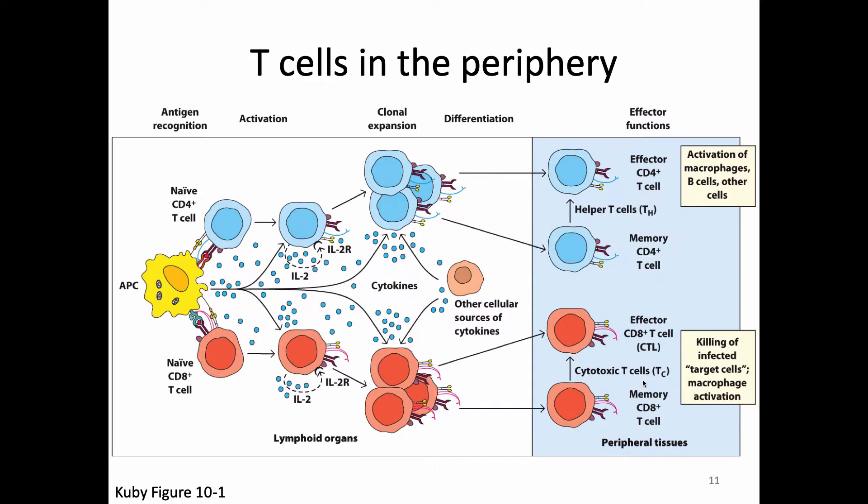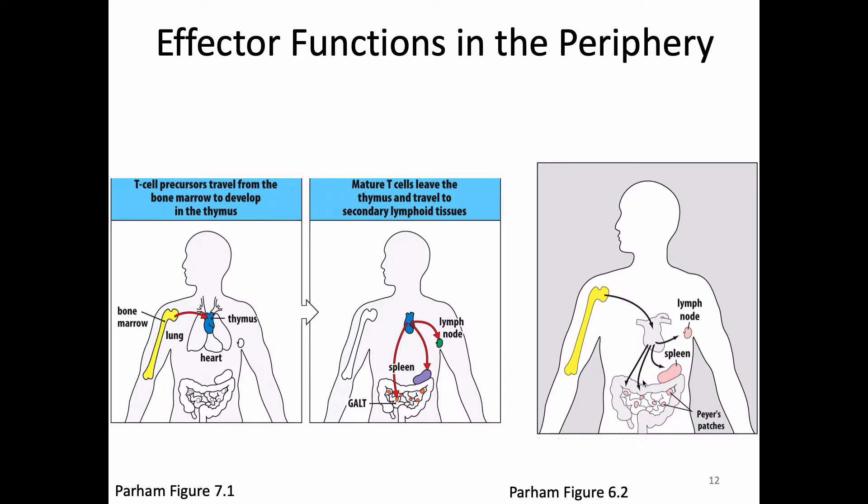We've been talking about T cell actions in the periphery for the past few days. Realize this is a continuation of our story of T cell development — a hematopoietic stem cell developed in the bone marrow, traveled to the thymus, finished development, then traveled to a secondary lymphoid organ where it found antigen. Previously we saw B cells doing their development in the bone marrow, but we didn't follow through on what happens to those B cells in the periphery. Now we're going to go through B cell effector function.